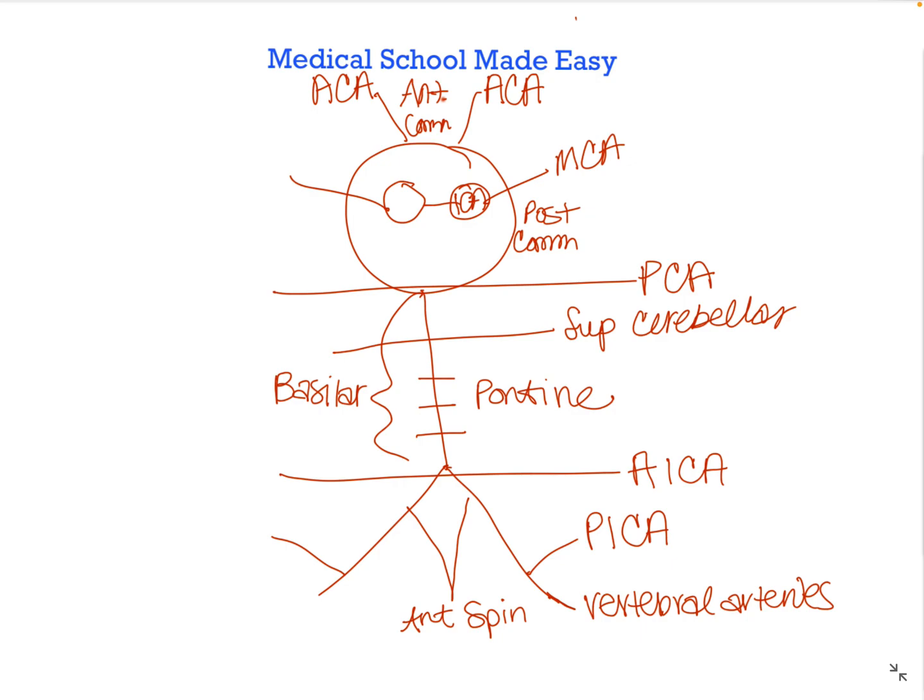To review: we have the anterior, middle, and posterior cerebral arteries. Those are all connected by your anterior communicating artery and your posterior communicating artery. Don't forget that the MCA comes off the ICA. Moving more distally, we have the basilar artery, from which the superior cerebellar artery and the pontine arteries come off. And if we have the superior cerebellar, we have to have the inferior cerebellar.